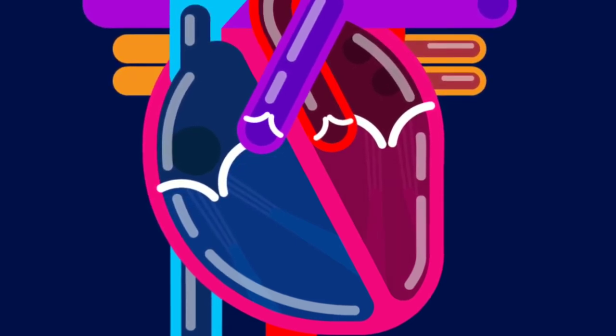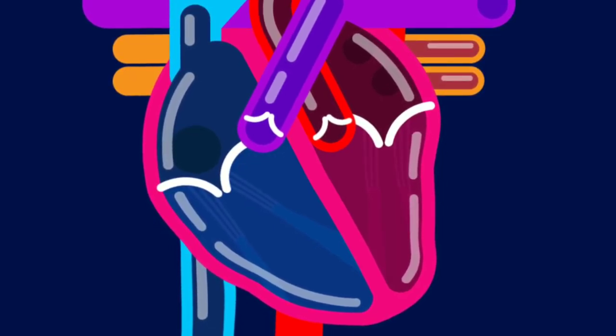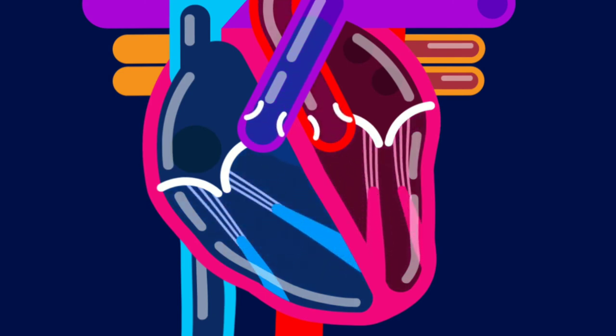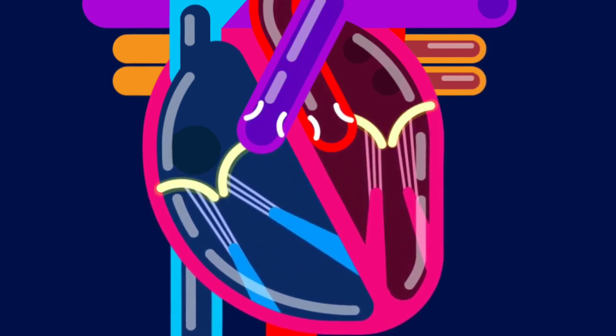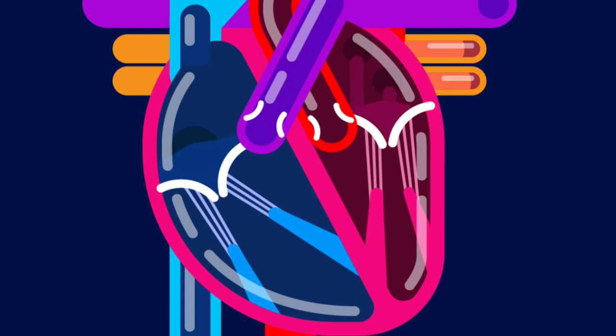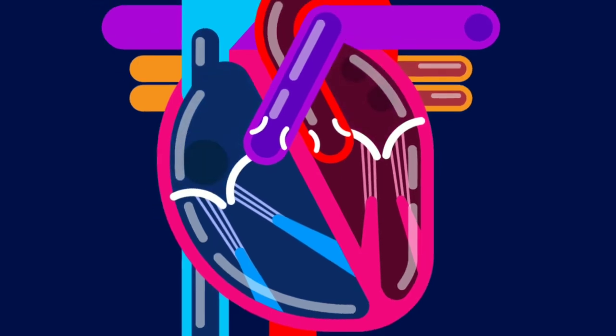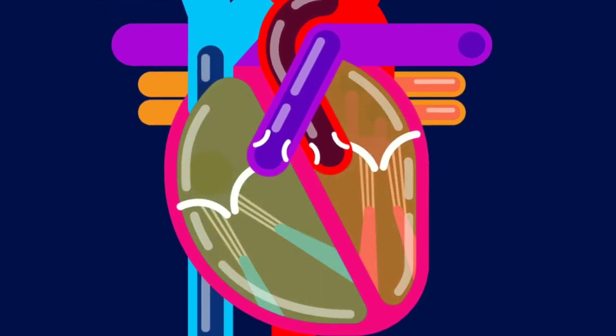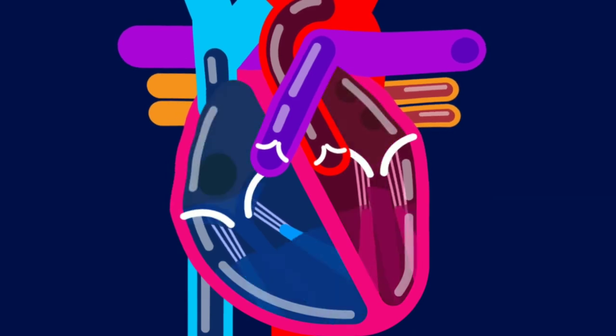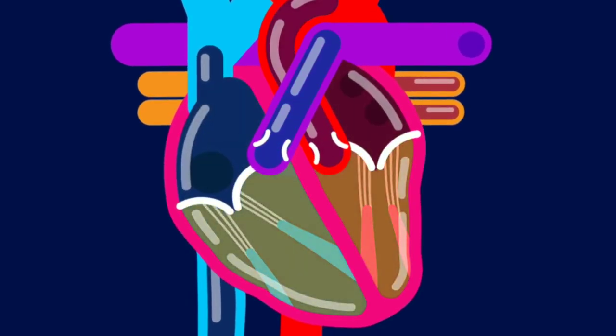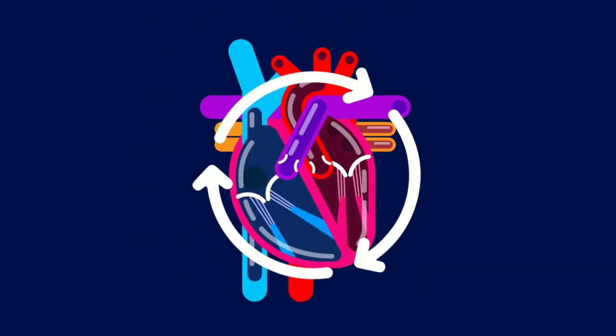During ventricular systole, muscles of both ventricles contract. The blood flows into the pulmonary artery and aorta. The mitral and tricuspid valves close and semilunar valves open. So a heartbeat is composed of a diastole phase, then an atrial systole, a ventricular systole, and back to diastole, and repeat.